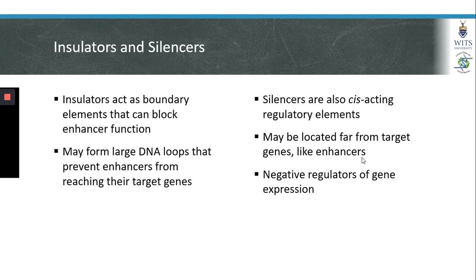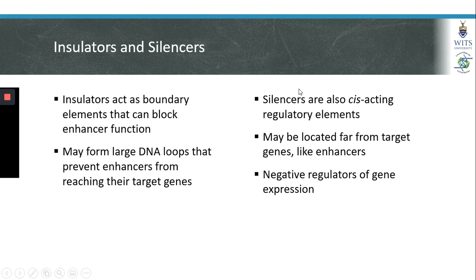Other regulatory elements include insulators and silencers. Insulators may act as boundary elements that can block enhancer function. For example, if an enhancer is located at a distance from the gene that it regulates, an insulator may form a large DNA loop between the enhancer and the promoter, preventing the enhancer from reaching or binding to the target promoter and preventing it from increasing gene expression. Like enhancers, silencers are also cis-acting regulatory elements. They may also be located at a distance from their target genes; however, silencers act in an opposite manner to enhancers in that they are negative regulators of gene expression.